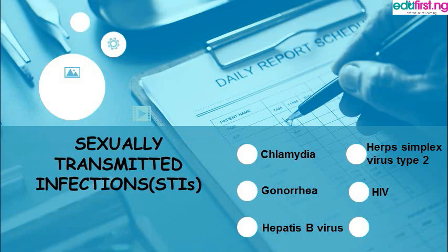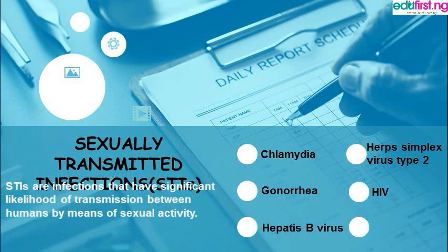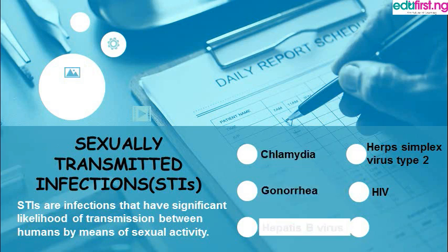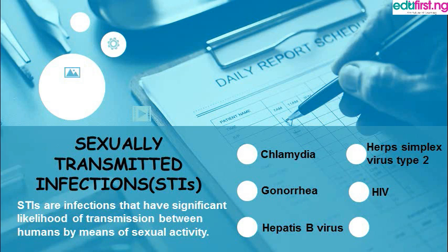If you also look at sexually transmitted infections — STIs — STIs are infections that have a significant likelihood of transmission between humans by means of sexual activity. These are the diseases that spread by virtue of sexual intercourse, and there are a number of them: chlamydia, gonorrhea, hepatitis B virus, herpes simplex virus, HIV, and so on. These are still part of reproductive health, and it is very important that you understand this.